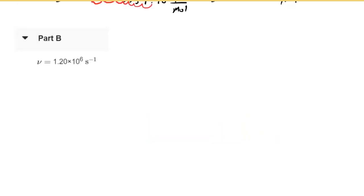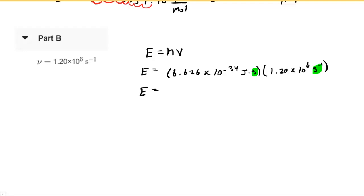Part B is extremely similar. They've just given us a different value for the frequency, so we'll go through this a little more quickly. The energy of one photon equals Planck's constant multiplied by the given frequency. We'll plug in the numbers. Recall that when we multiply them, the seconds and the inverse seconds will cancel each other out. This gives us 7.95 times 10 to the minus 28 joules.